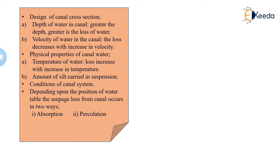Regarding the design of a canal cross-section: first, the depth of water in the canal — the greater the depth, the greater is the loss of water. Secondly, the velocity of water in the canal — the loss decreases with the increase in velocity. And if the velocity is minimum, then definitely losses are maximum.